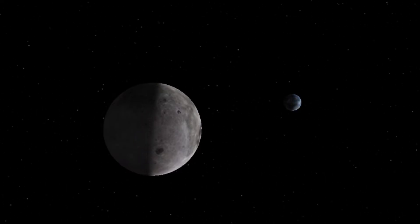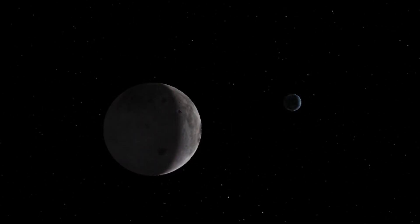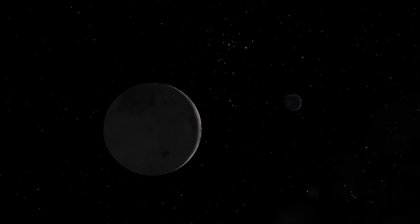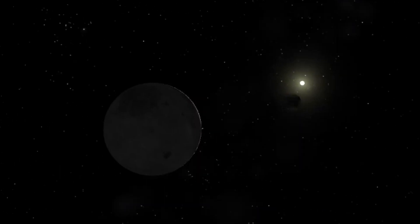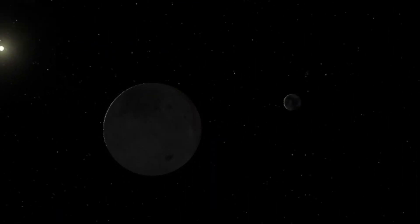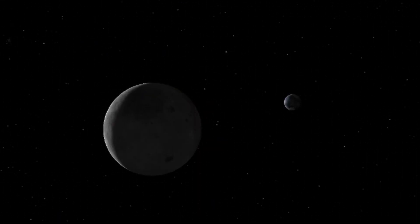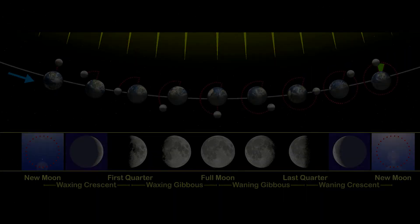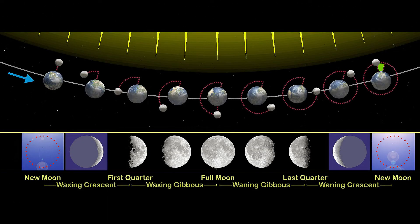From Earth, we can only see part of the portion of the Moon illuminated by the Sun, depending on where it is positioned in the sky relative to the Sun, and this produces the cycle of Moon phases. These range from Full Moon, when we see the entire lit side of the lunar surface on the opposite side of the sky from the Sun, all the way to the New Moon, when the lit portion is facing completely away from the Earth, and the Moon is very close to the Sun in the sky.